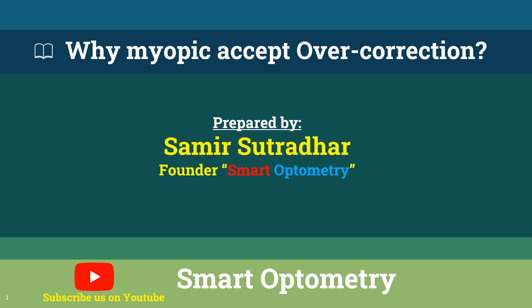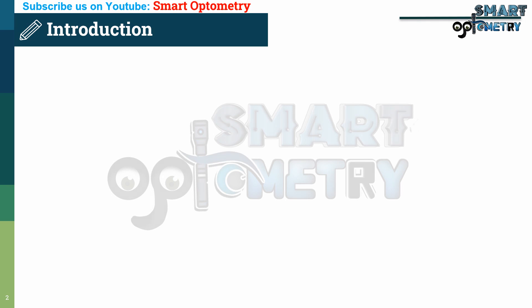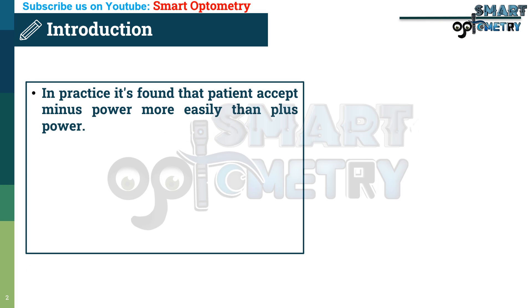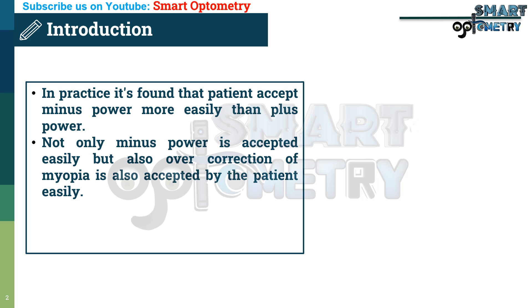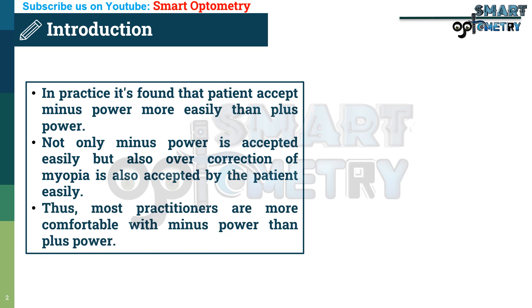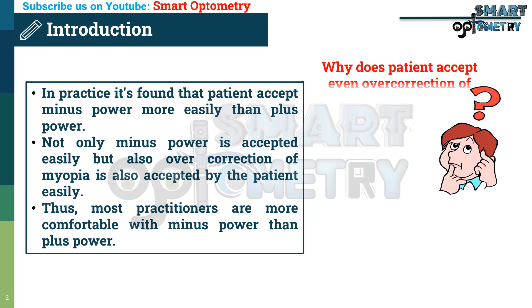Today, I will discuss why myopic patients accept over-correction of myopia comfortably during refraction. In practice, it's found that patients accept minus power more easily than plus power. Not only is minus power accepted easily, but over-correction of myopia is also accepted by the patient easily. Thus, most practitioners are more comfortable with minus power than plus power. Why does a patient accept even over-correction of myopia comfortably?